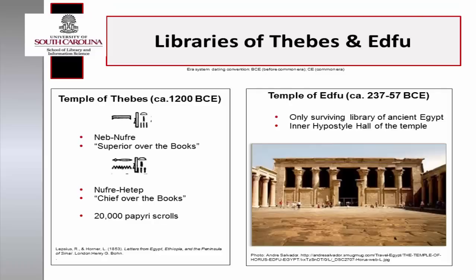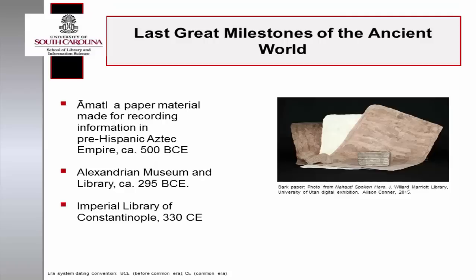In the closing millennium of the ancient world, other notable achievements included the production of amate, a paper material made from fig trees in the pre-Hispanic Aztec Empire circa 500 BCE. The Alexandrian Museum and Library, estimated to have contained over 400,000 manuscripts cataloged in the library's Pinakes, was considered the research hub of the Hellenistic world. The Imperial Library of Constantinople is considered to have been instrumental in the preservation of ancient Greek literature — an estimated 100,000 texts are thought to have been transcribed from papyrus to parchment, thin layers of stretched animal skin. All of these great milestones were destroyed by the fires of conquest.